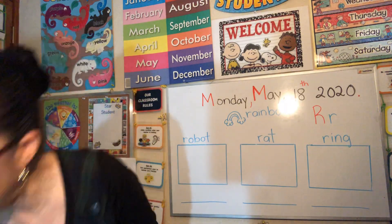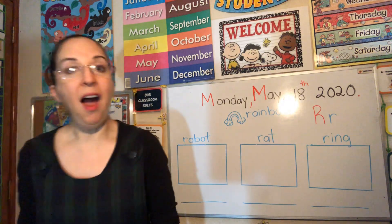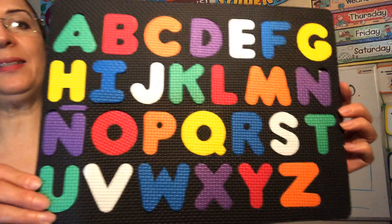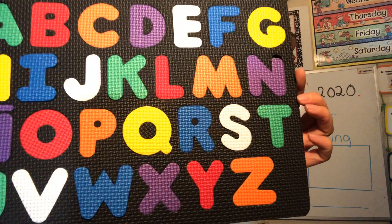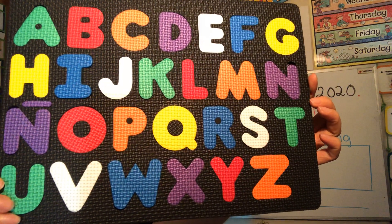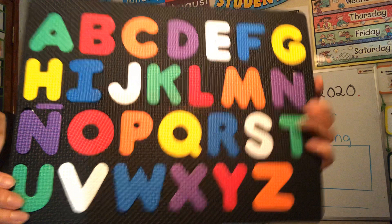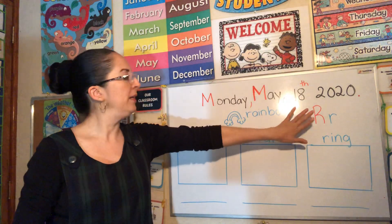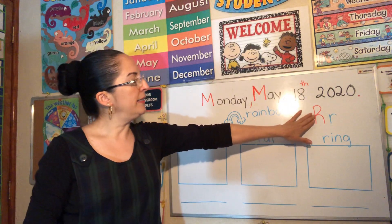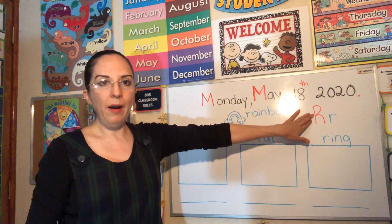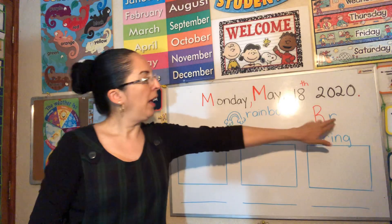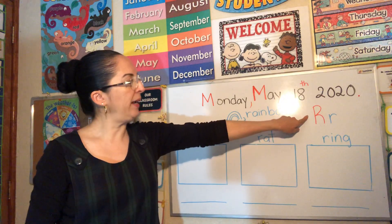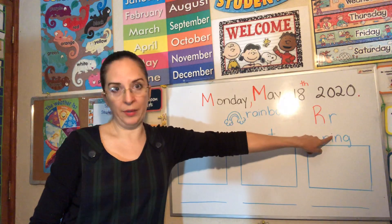What letter is this? R. Point to the letter, please. Very good. Now take a look here. This is capital R and this is a small r. R, uppercase and lowercase.